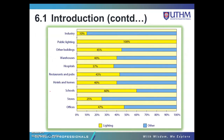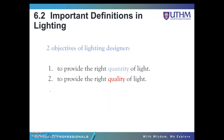There are two objectives of a lighting designer. The first is to provide the right quantity of light — the right number of lighting fixtures for a certain place. The second is to provide the right quality of light — providing the right quality based on standard laws for a specific place. So the two objectives are quantity and quality of light.